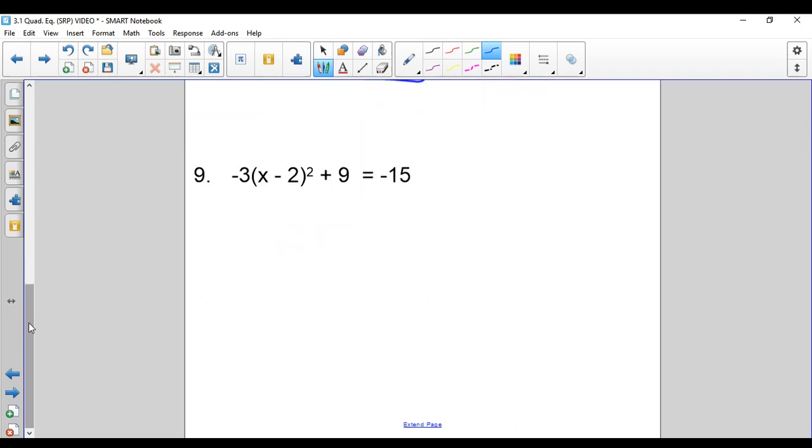Last one has the most going on, but same idea. You get whatever's being squared by itself. So you subtract 9 from both sides. Get negative 3 times X minus 2 squared equals negative 4. Divide by negative 3. Do not square it at this point.